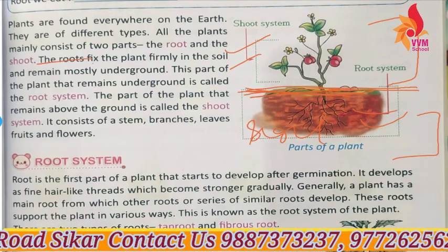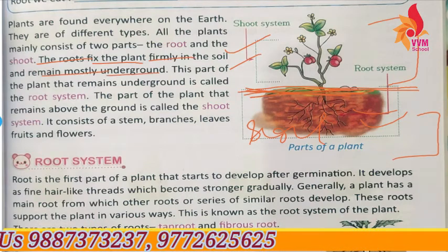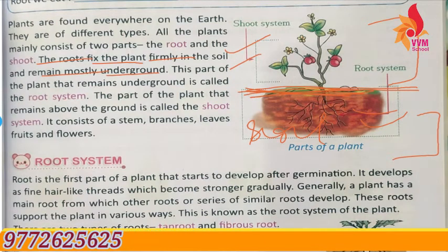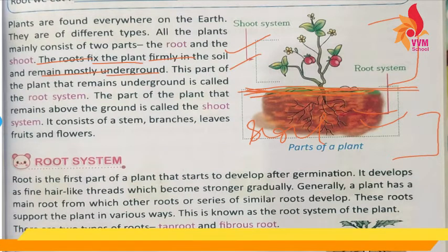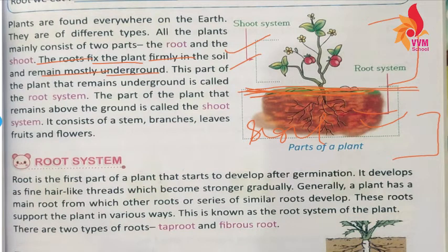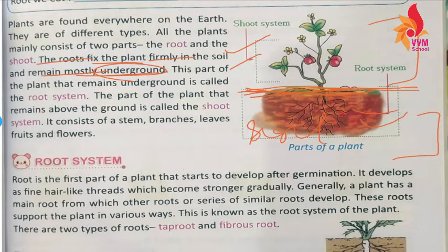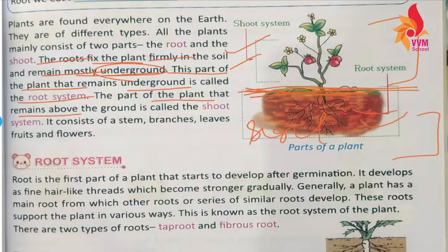The root fixes the plant firmly in the soil and remains mostly underground. The part of the plant that remains underground is called the root system. The part of the plant that remains above the ground is called the shoot system.